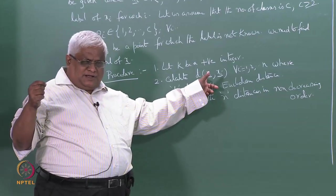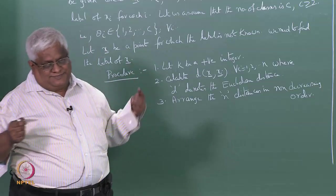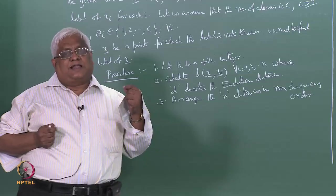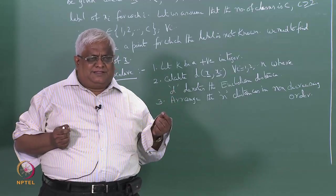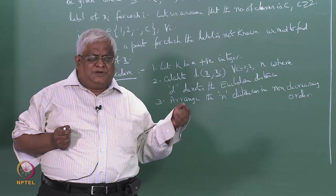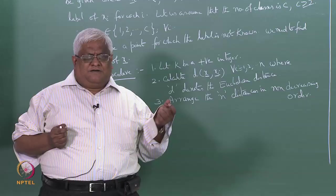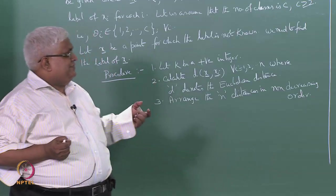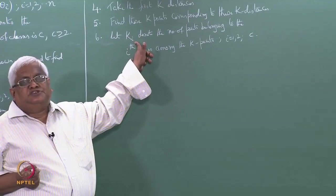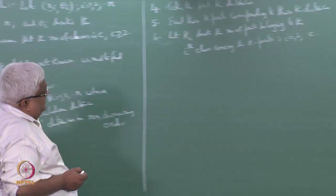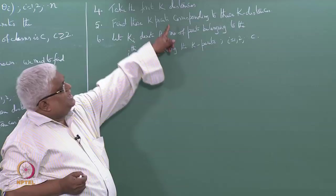For example, if c equals 10 and k equals 1, we arrange the n distances in non-decreasing order and find the first distance — giving exactly one point. If that point belongs to class 2, then k2 equals 1 and all other ki equal 0. So ki denotes the number of points belonging to the ith class among the k nearest neighbors.